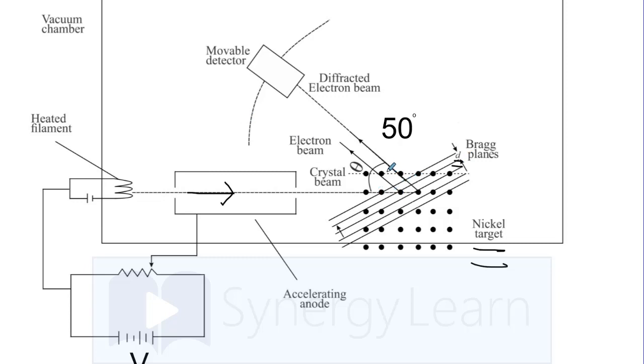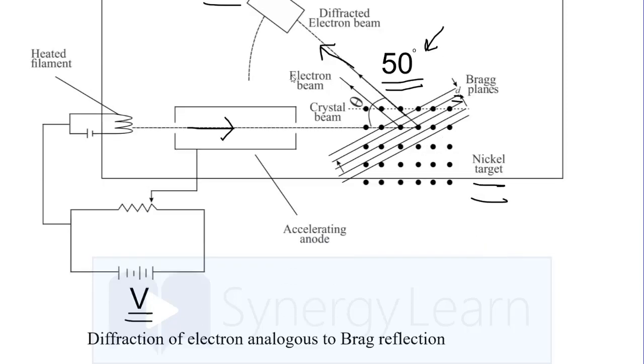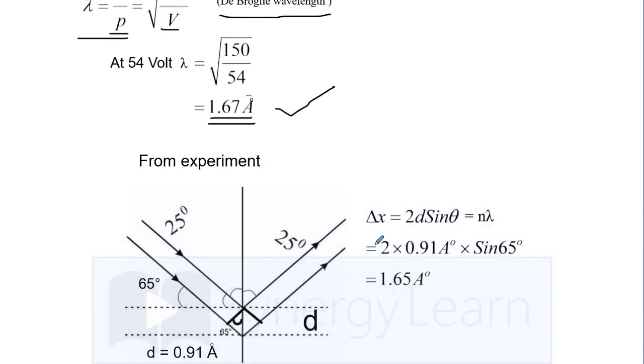When the diffracted electron beam was recorded using a movable detector at various angles, they found that at 54 volt, at 50 degree angle, the intensity recorded was maximum. From the experiment we have two data: 54 volt and 50 degree, which we will use in Bragg's law. This is the famous Bragg's law relation: delta x equals 2d sin theta, which in case of constructive interference equals n lambda.